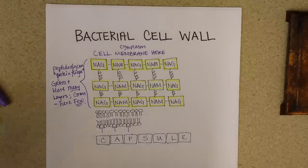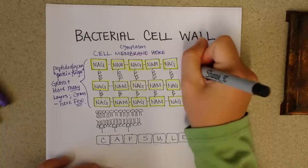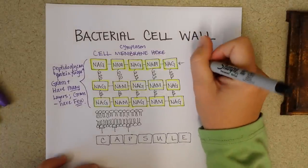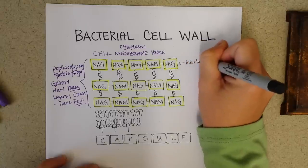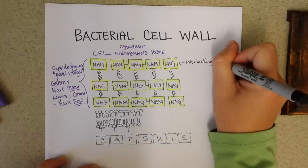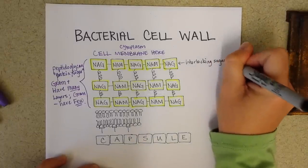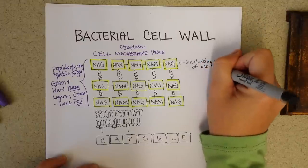So let's go ahead and use a black pen to label this. These are the interlocking sugars, the NAGs and the NAMs. So that's the glycan part. And this would be of one layer.